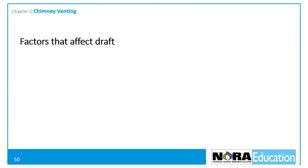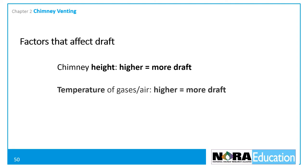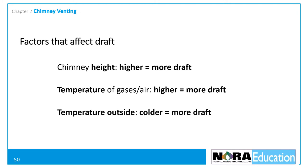Three main factors control the amount of chimney draft that is generated: the chimney height — the higher the chimney, the greater the draft; the temperature of the combustion gases — the hotter they are, the greater the draft; and the temperature of the air outside the building — the colder it is outside, the greater the draft.